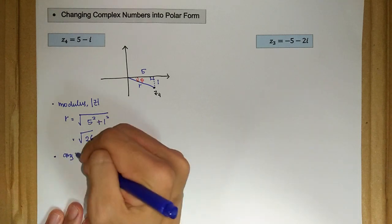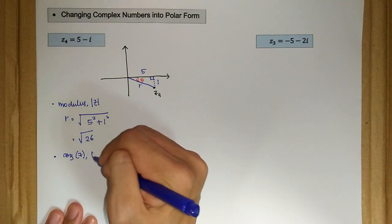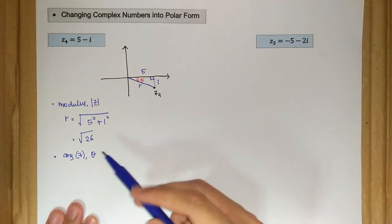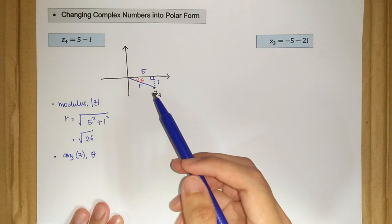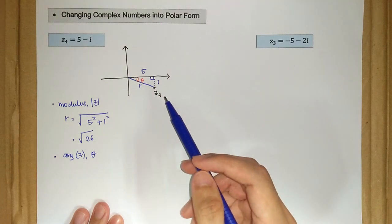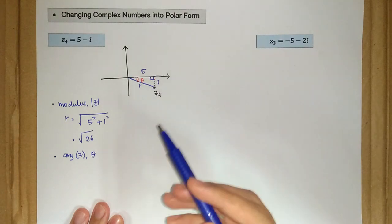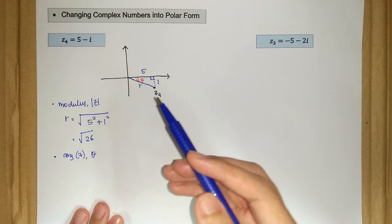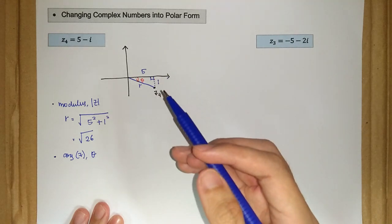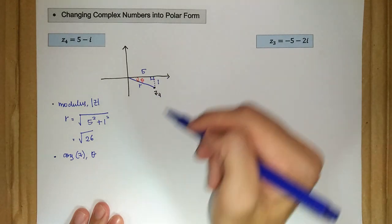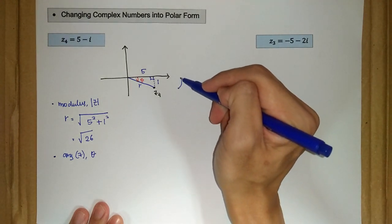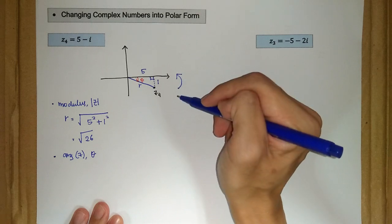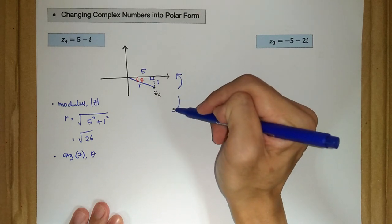And then what about the angle here, the argument? The argument z, or the angle. And I want to touch a little bit about the angle here. An angle is actually the measure of rotation, and when we rotate something, we either rotate it in anticlockwise direction or in clockwise direction.